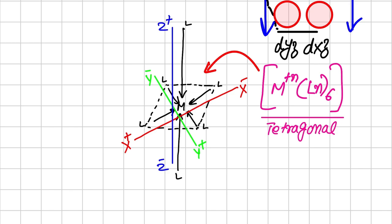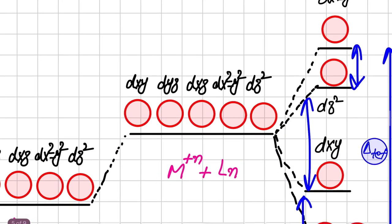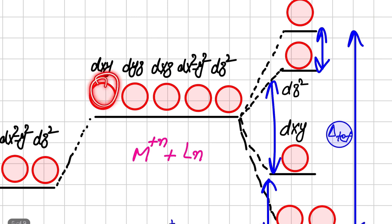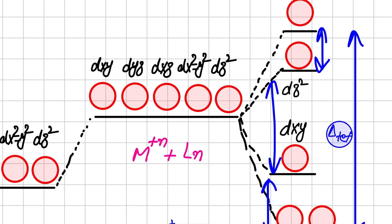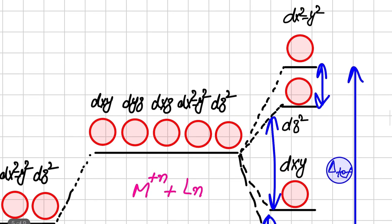If we consider the d orbitals — dxy, dyz, dxz, dx²-y², and dz² — since dz² is along the z-axis, it will feel less repulsion. Similarly, dyz will feel less repulsion and will be low in energy. Whereas dxy and dx²-y² will be high in energy because the ligands are coming more close to the metal through the xy plane, so they will feel more repulsions.